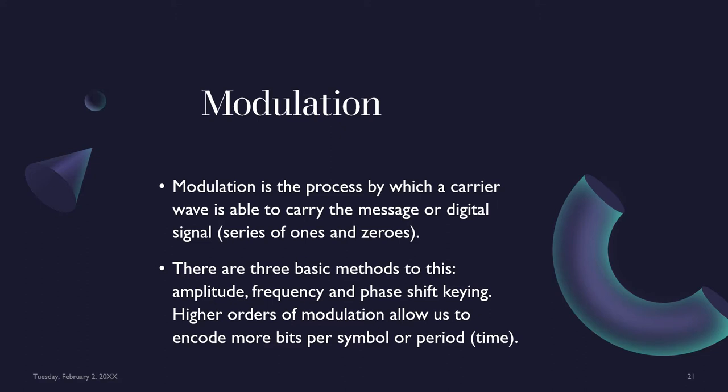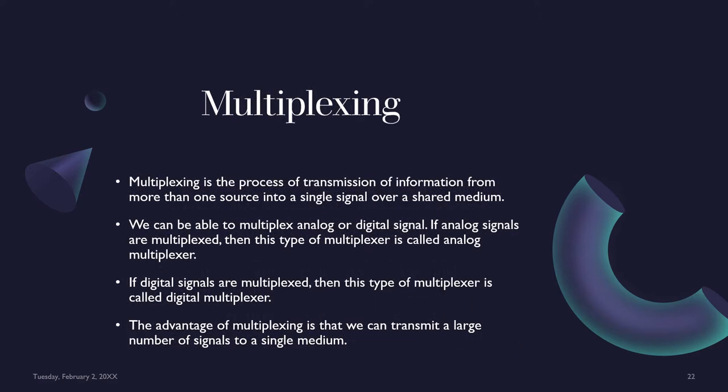Modulation is the process by which a carrier wave carries the message as a digital signal — a series of 1s and 0s. There are three basic modulation methods: Amplitude Shift Keying, Frequency Shift Keying, and Phase Shift Keying. Higher orders of modulation allow us to encode more bits per symbol period. Multiplexing is the process of transmitting information from more than one source into a single signal over a shared medium.